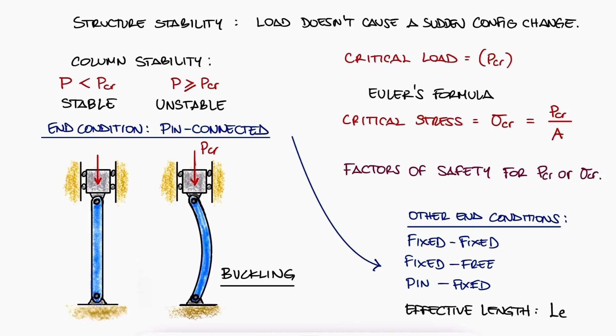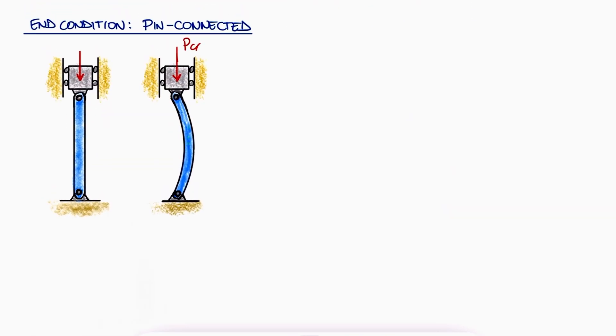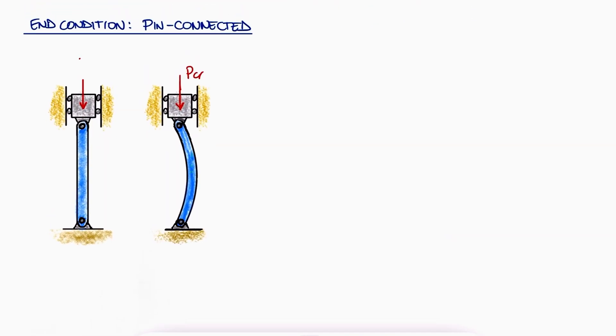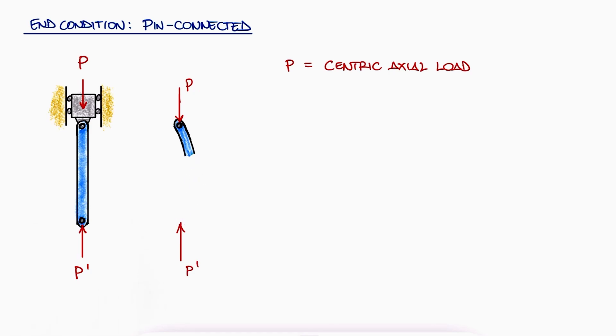For a column that is pin-connected at both ends, a centric load P can be applied to cause a compressive axial load. If the load and its reaction at the other end are perfectly aligned, then buckling will never happen. But since this idealistic scenario is in practice never achievable, we'll take the beam in its buckled state and perform a cut at a distance x from the top.